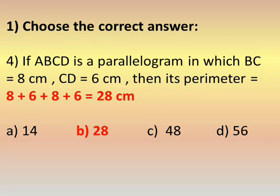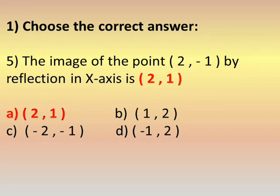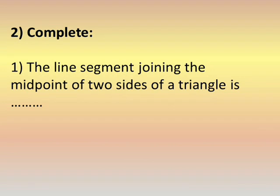Number five: the image of the point (2, negative 1) by reflection in the x-axis. In reflection in the x-axis, the change will be in y. So negative 1 becomes positive 1. The image is (2, 1).